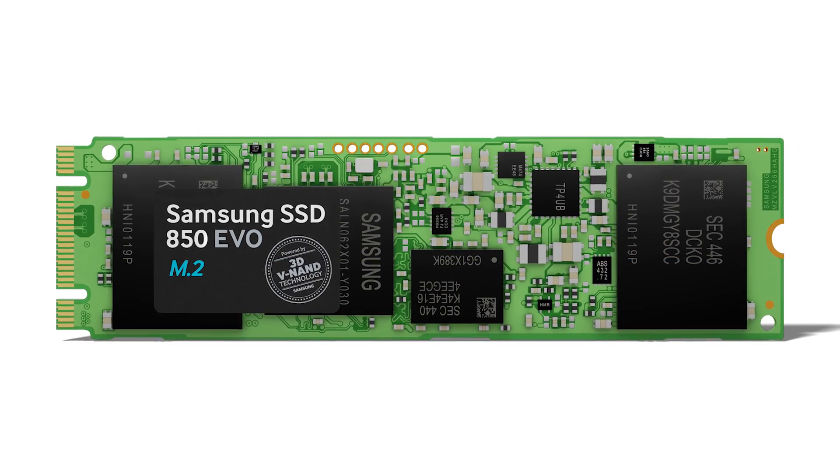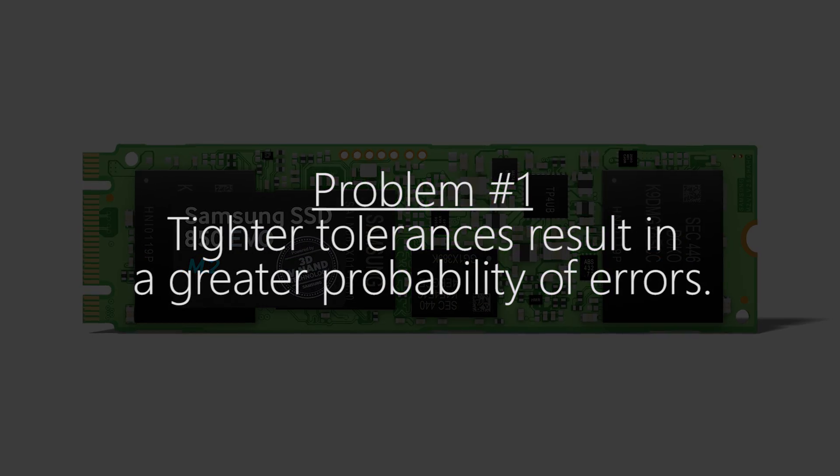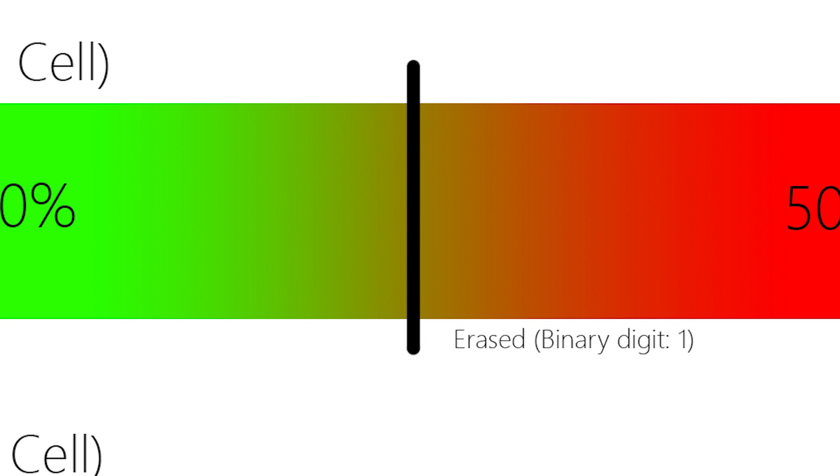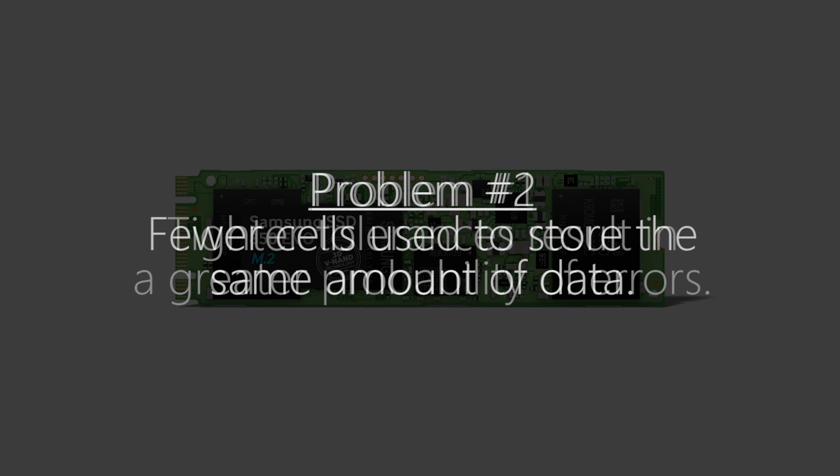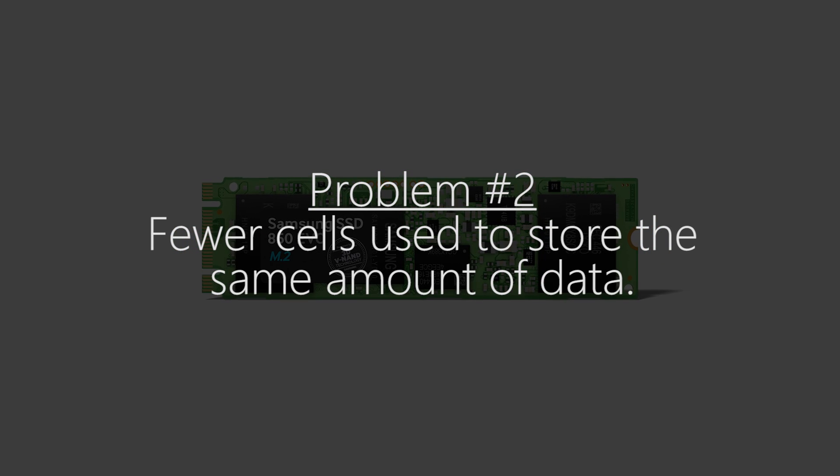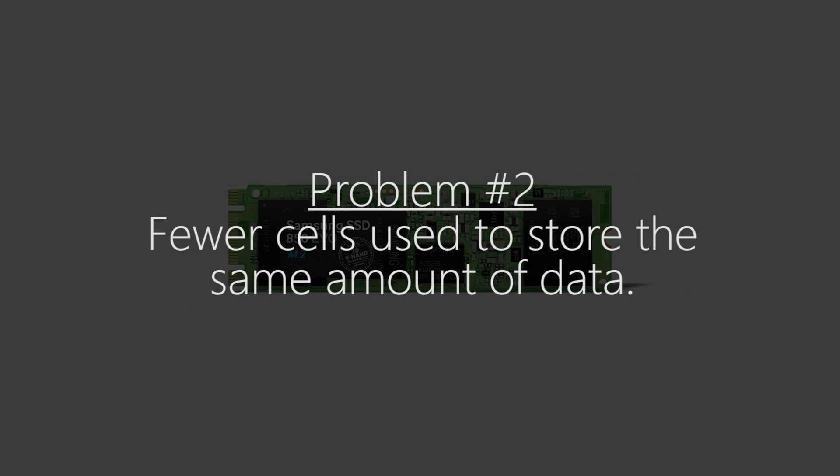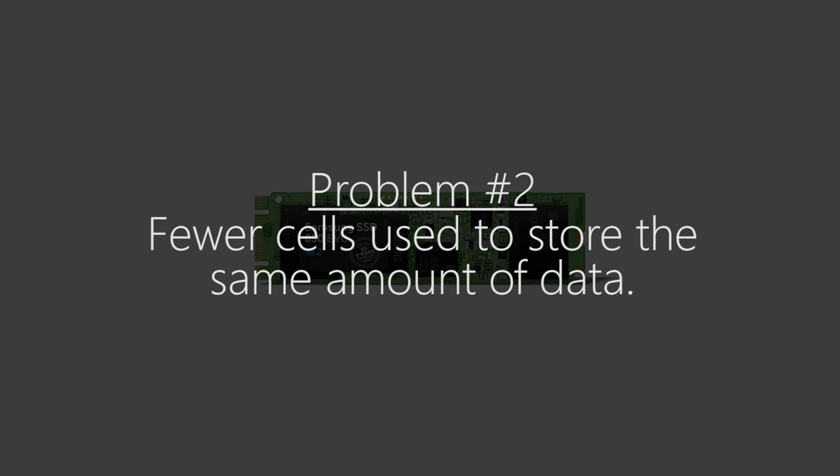One major problem is that MLC flash has far tighter tolerances, because the guard band, the difference between the states, is massively reduced. But the main problem is obviously that less cells will be used to store the same amount of data, meaning that each one will wear out more quickly.